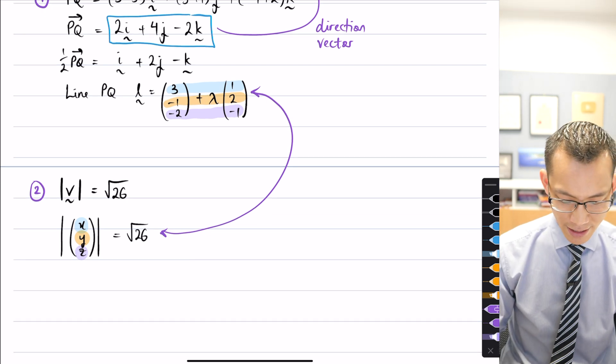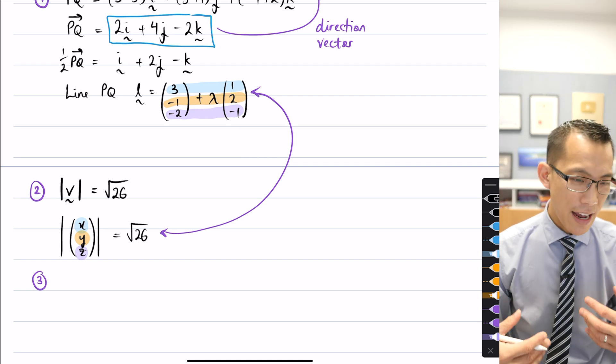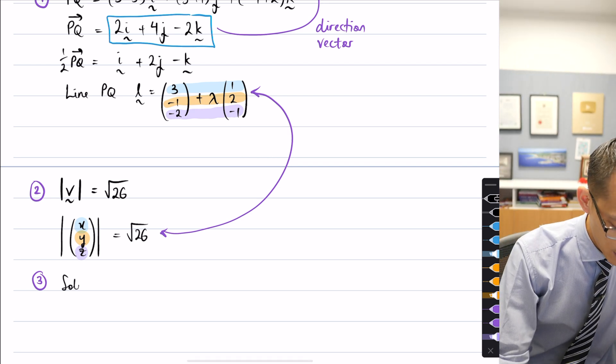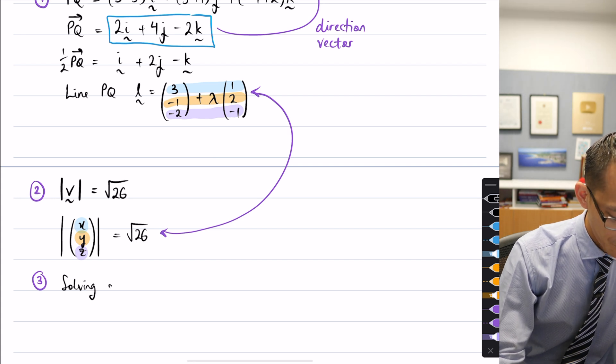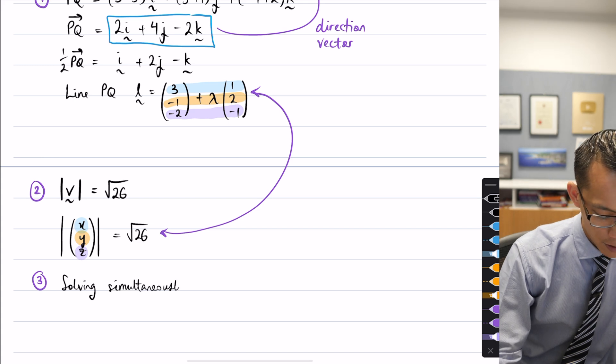So when I'm solving simultaneously, step two is not much of a step. Here is step three. What I'm going to end up doing is saying, hey, if I'm equating these, solving simultaneously. Simultaneously is such a long word to write, but that's okay.